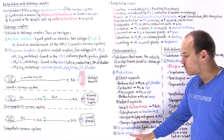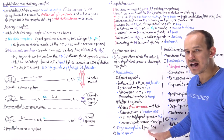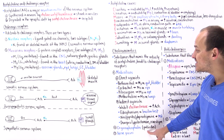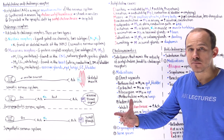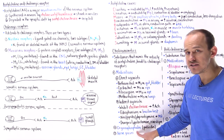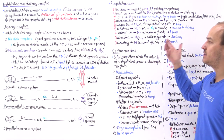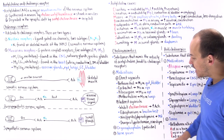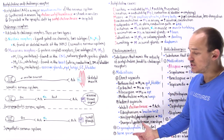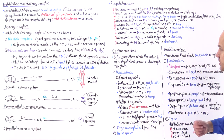Toxins that are cholinomimetics include organophosphates, which are pesticides or insecticides. Farmers who deal with organophosphates can develop organophosphate poisoning, which means they have too much acetylcholine in the body. We can also have nerve gases, which are used in war or by terrorists. That covers cholinomimetics.